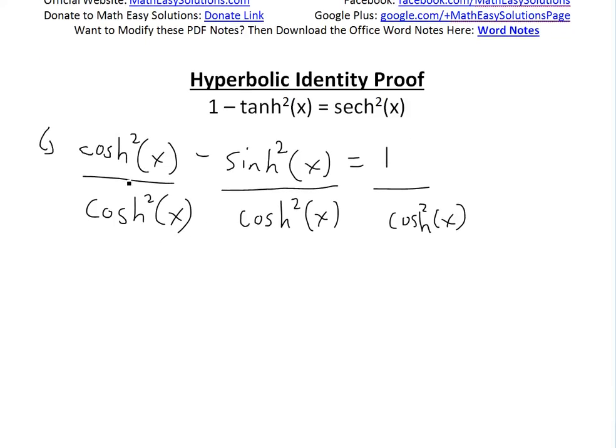This part right here is going to be just 1. They cancel. 1 minus this part here is, by definition, hyperbolic tanh squared of x. Now this one, by definition, is just hyperbolic secant squared of x.